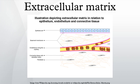The cell wall also serves as a medium for intercellular communication. It comprises multiple laminate layers of cellulose microfibrils embedded in a matrix of glycoproteins, including hemicellulose, pectin, and extensin. The components of the glycoprotein matrix help cell walls of adjacent plant cells to bind to each other. The selective permeability of the cell wall is chiefly governed by pectins in the glycoprotein matrix.